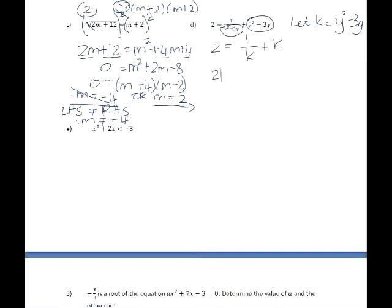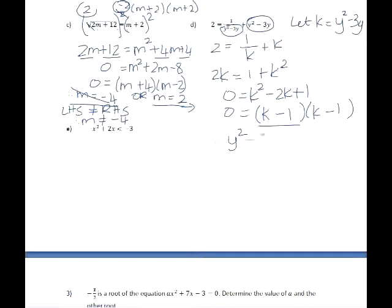Multiply through by the LCD, which in this case is k, and into standard form, we'll have 0 is equal to k² - 2k + 1. If we factorize that, this is actually a perfect square, so it'll be (k-1) and (k-1), so we only have to consider 1 bracket. If we just substitute the value back that we, because remember, we're not solving for k, we're solving for y² - 3y, so we'll be able to say that y² - 3y - 1 is equal to 0.